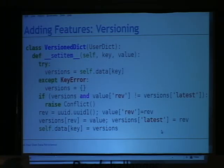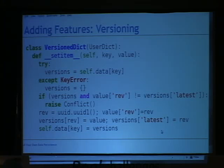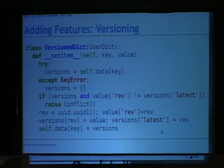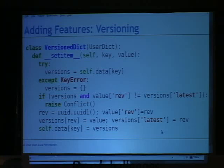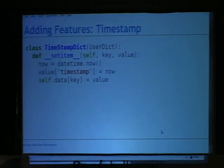Let's say we want to add versioning, which was in the requirements for the invoice problem. We can store something different than what we present to the user — a dictionary that returns the latest version by default, or a specific revision if you pass a tuple with a revision number. Version dict will also detect conflicts: on the way in it stores the revision using a UUID, and when you check out a revision and try to store it back, it checks that you have the same revision as the latest. This is called optimistic locking — this is actually what CouchDB does.